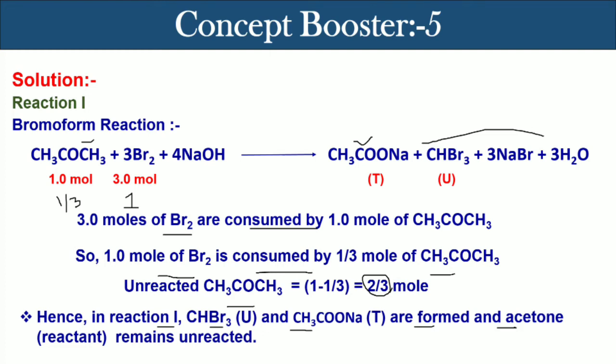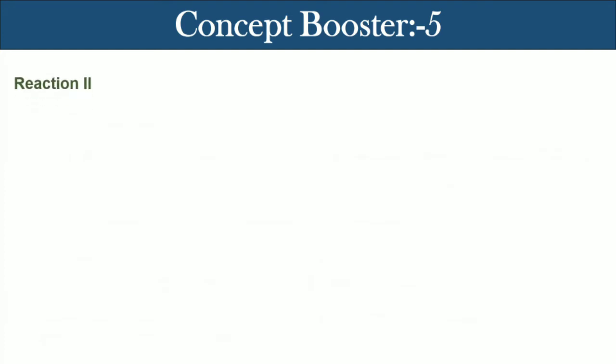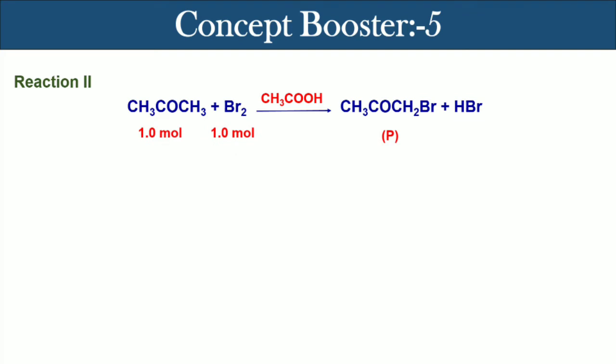Now in reaction 2, one mole of acetone is treated with one mole of bromine in acetic acid medium to produce mono bromine acetone and HBr. The mechanism of this reaction is pretty simple and familiar to all of you, so I am not going to explain it.